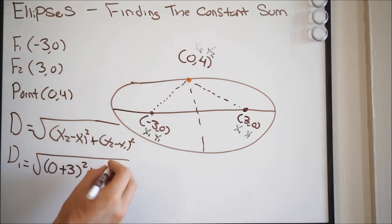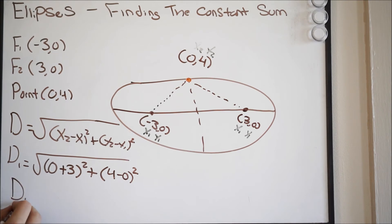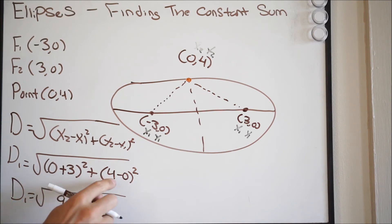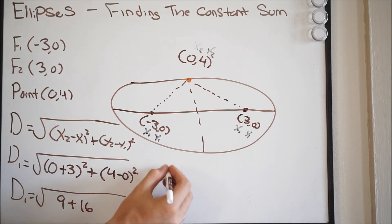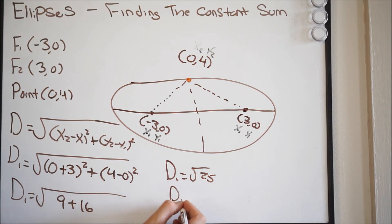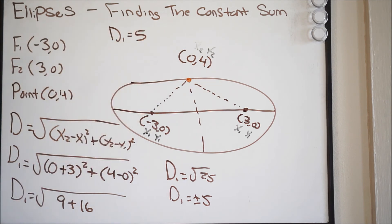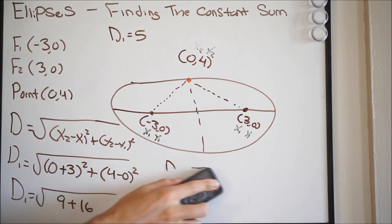So y2 is four and y1 is zero. This gives us three squared which is nine, plus four squared which is 16. Nine plus 16 is 25, so distance one is the square root of 25. That gives us plus or minus five, but since we're talking about a distance it must be positive — so distance one equals five.